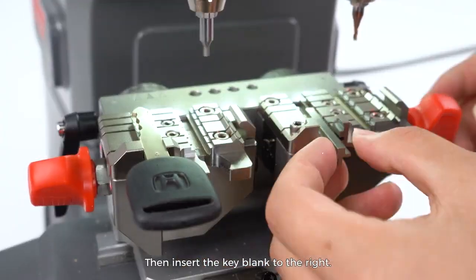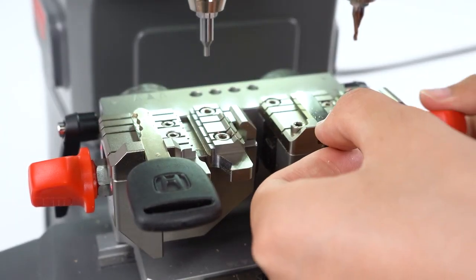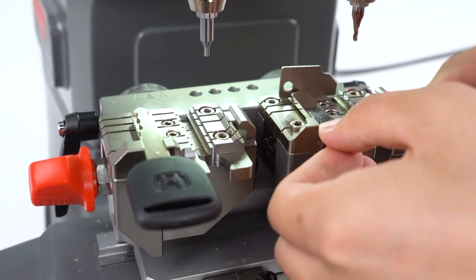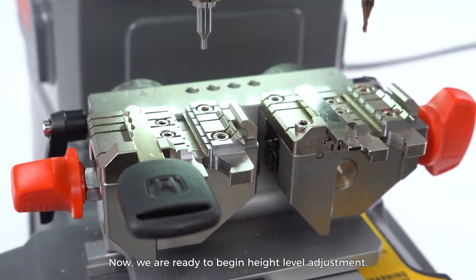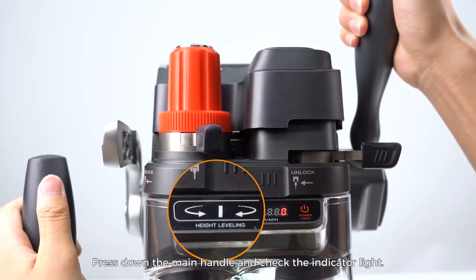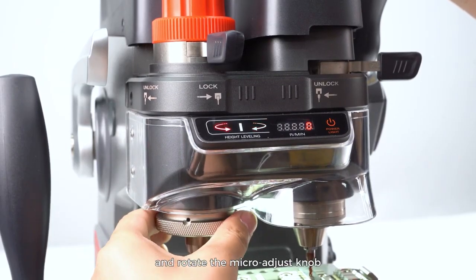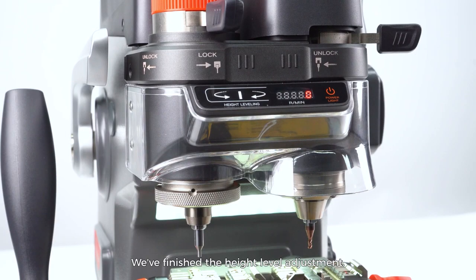Then insert the key blank to the right. Now we are ready to begin height level adjustment. Press down the main handle and check the indicator light. You should just follow the direction of the light and rotate the micro adjust knob. When the middle light turns green, we've finished the height level adjustment.